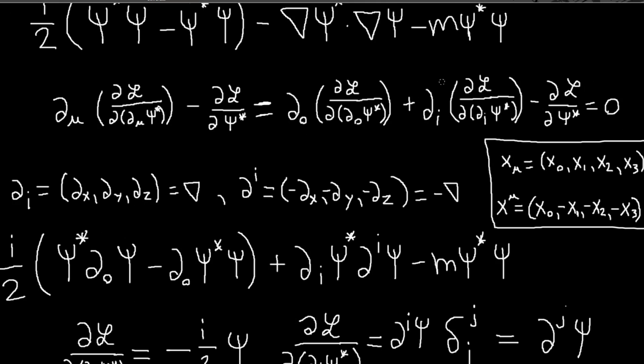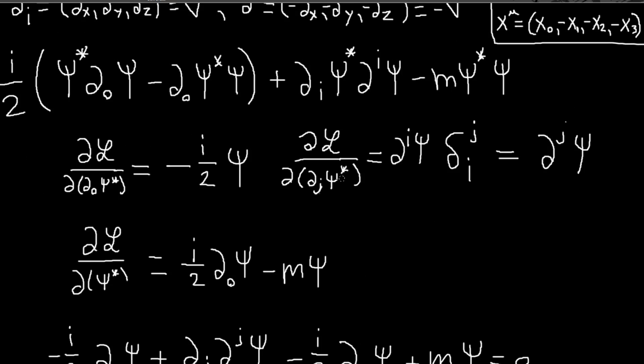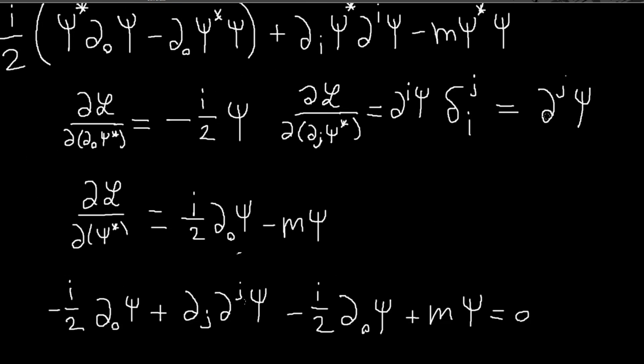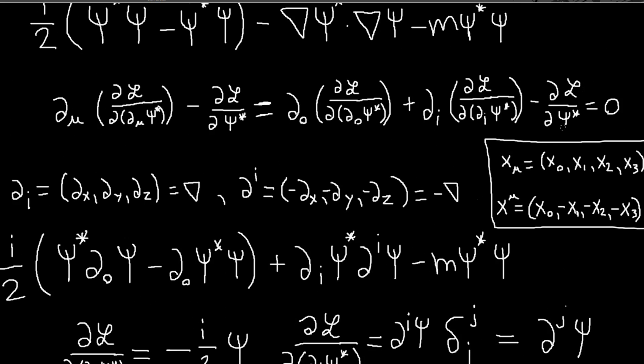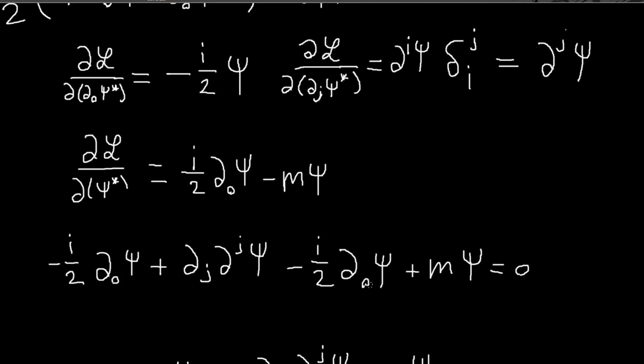d_0 of this will just be negative i over 2 d_0 psi. And then we'll get plus d_j of this. So d_j of this, I just get d_j d_j psi. And then minus this. So minus i over 2 d_0 psi, and then plus m psi, and all that equals 0.